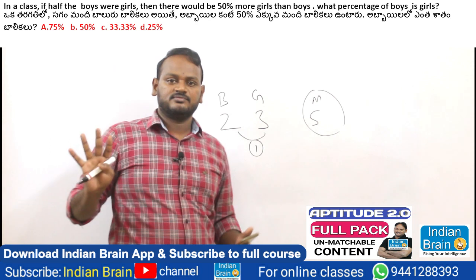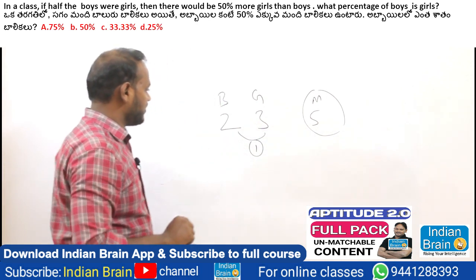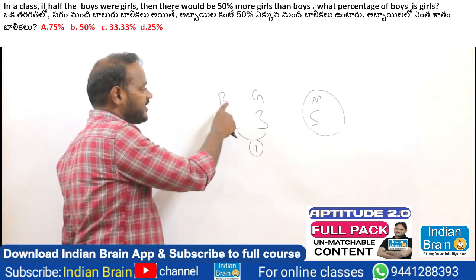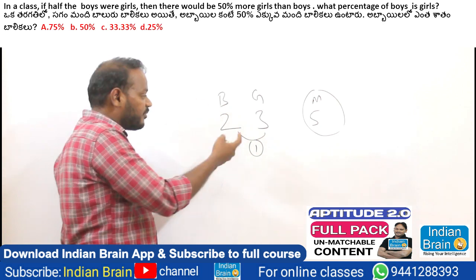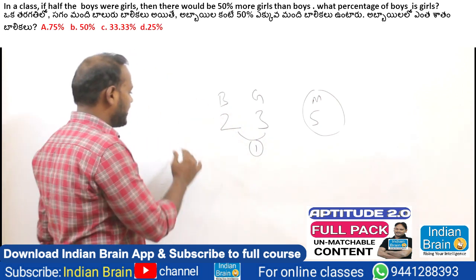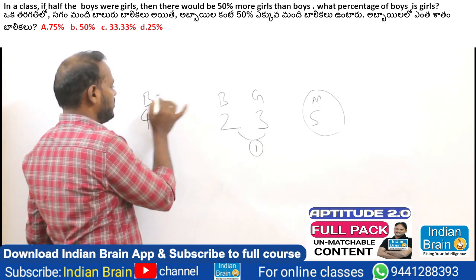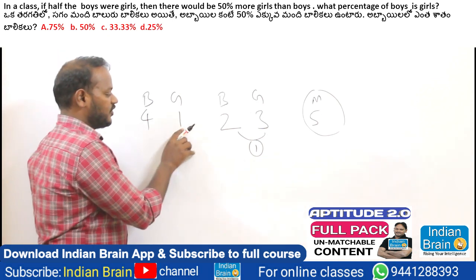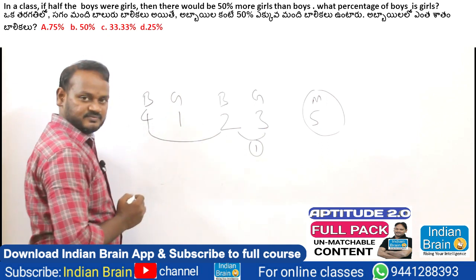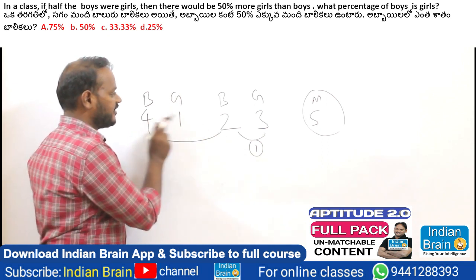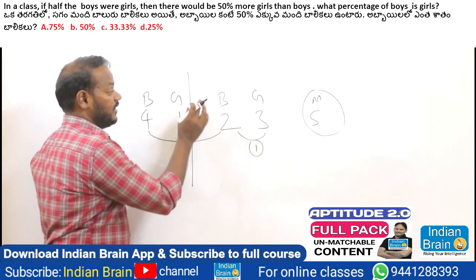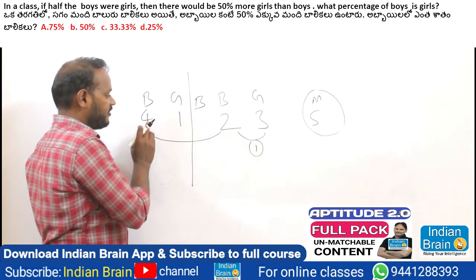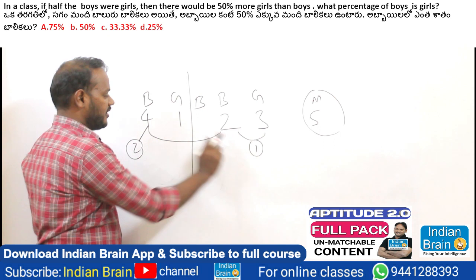But the condition is: half the boys become girls. So if boys are two, we double that — four boys are the original count. Four members boys are present, and half of four is two, which matches our working example.